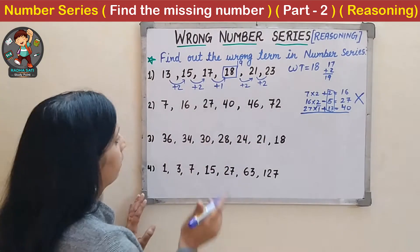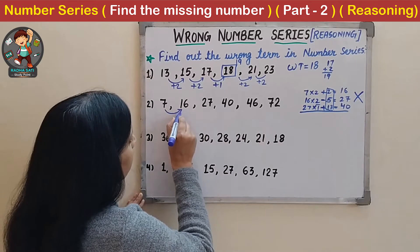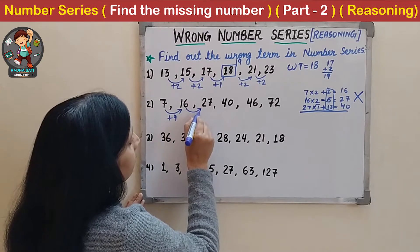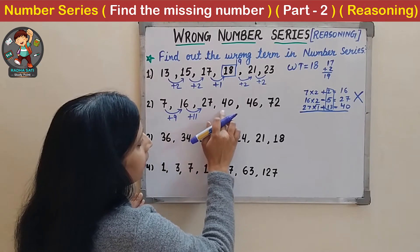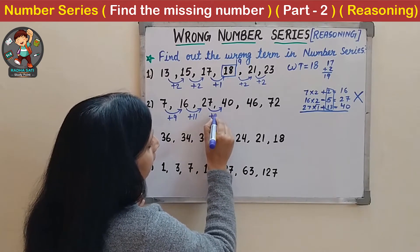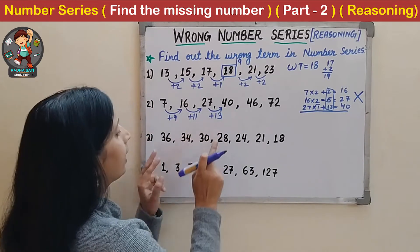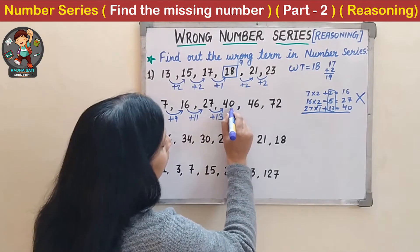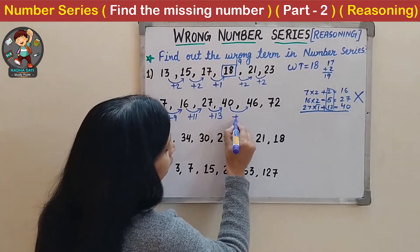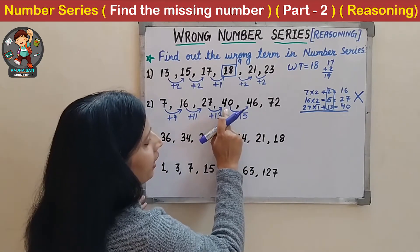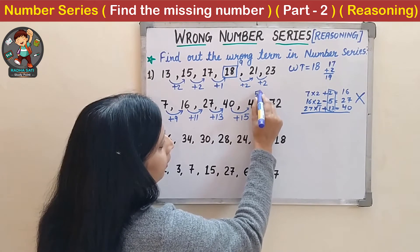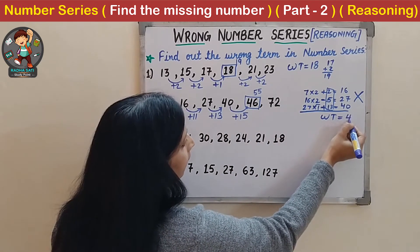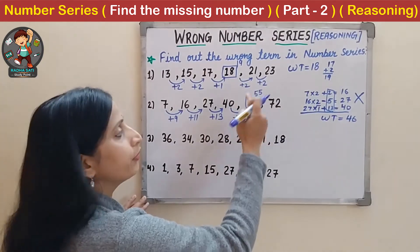So let us check for addition. To get 16 we add: 7 plus 9 is 16. Then 16 plus 11 is 27. Then 27 plus 13 is 40. So till here we can see that 9, 11, 13 are consecutive odd numbers. The next number in this series should add 15, and 40 plus 15 gives 55. But the number given is 46, which means the wrong term is 46 - instead of 46 it should be 55.